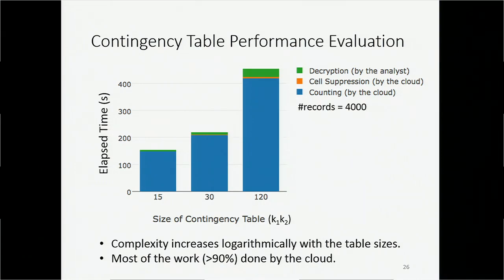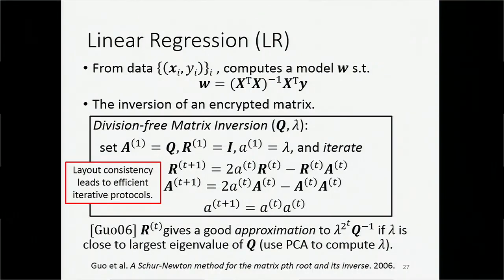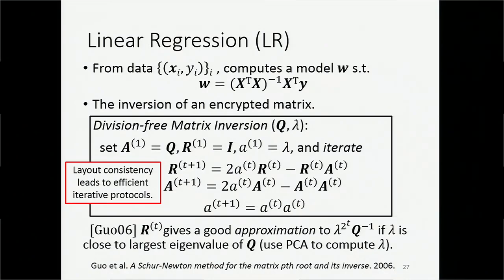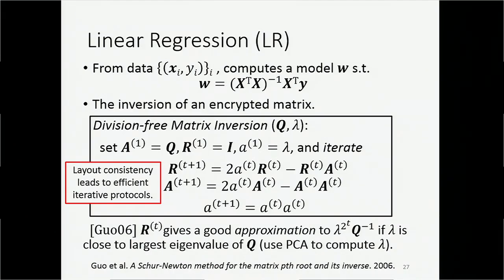The last protocol is doing linear regression from encrypted numerical data. Linear regression basically requires computing the standard formulation. The main effort of our linear regression protocol is to do the inversion of an encrypted matrix. We use a division-free iterative algorithm to iteratively approximate the inversion of matrix Q given parameter lambda. All we need here is matrix addition and matrix multiplication, so we can easily implement this algorithm with our matrix primitive. According to theory, we want the parameter lambda to be the largest eigenvalue of Q, which gives a good approximation. We use our PCA protocol to compute the largest eigenvalue.